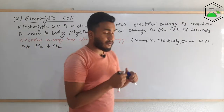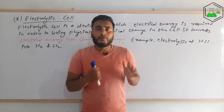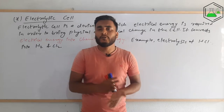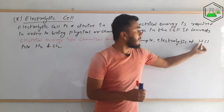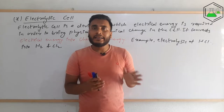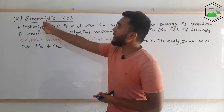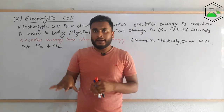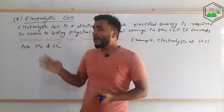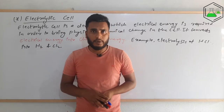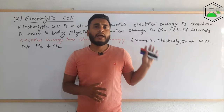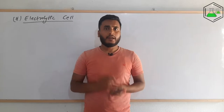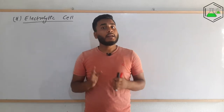To do the electrolysis of hydrochloric acid — if we need hydrogen and chlorine out of HCl — we need to do the electrolysis of it. That is done by this electrolytic cell. We put the solution in the electrolytic cell and that helps us to get HCl broken down by the electrolysis phenomenon. Let's understand in detail how it happens.